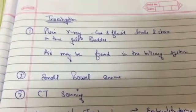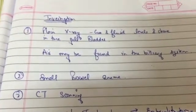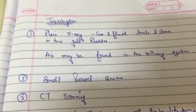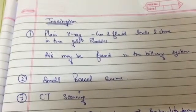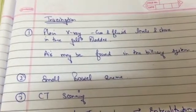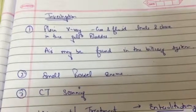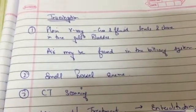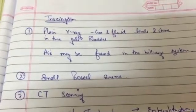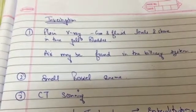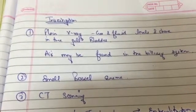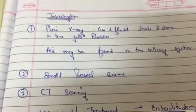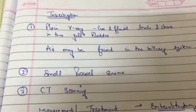Now I will talk about investigations. The first investigation is a plain X-ray — on the X-ray you would like to see gas and fluid in the biliary system. Next is small bowel enema, which will tell you whether there is partial or complete obstruction. The investigation of choice is CT scan, because it helps you see inflammation of the gallbladder.